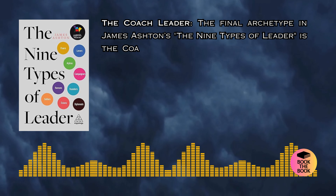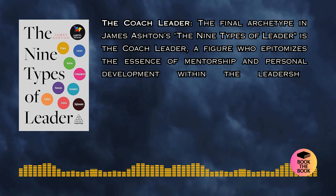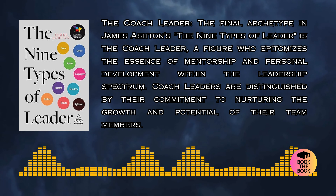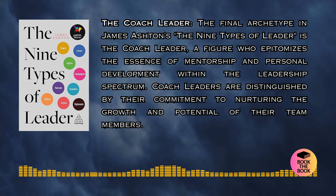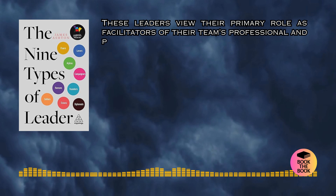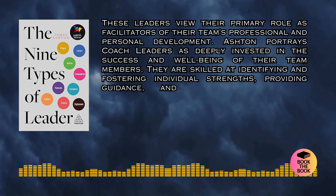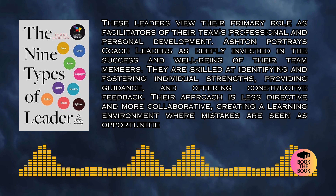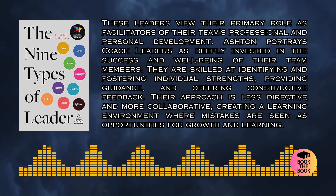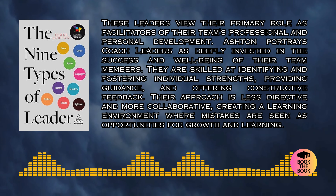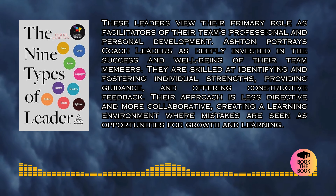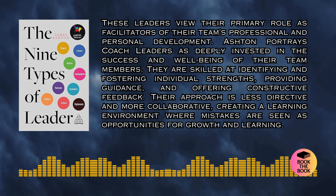The final archetype in James Ashton's nine types of leader is the coach leader, a figure who epitomizes the essence of mentorship and personal development within the leadership spectrum. Coach leaders are distinguished by their commitment to nurturing the growth and potential of their team members. Ashton portrays coach leaders as deeply invested in the success and well-being of their team. They are skilled at identifying and fostering individual strengths, providing guidance, and offering constructive feedback. Their approach is less directive and more collaborative, creating a learning environment where mistakes are seen as opportunities for growth.